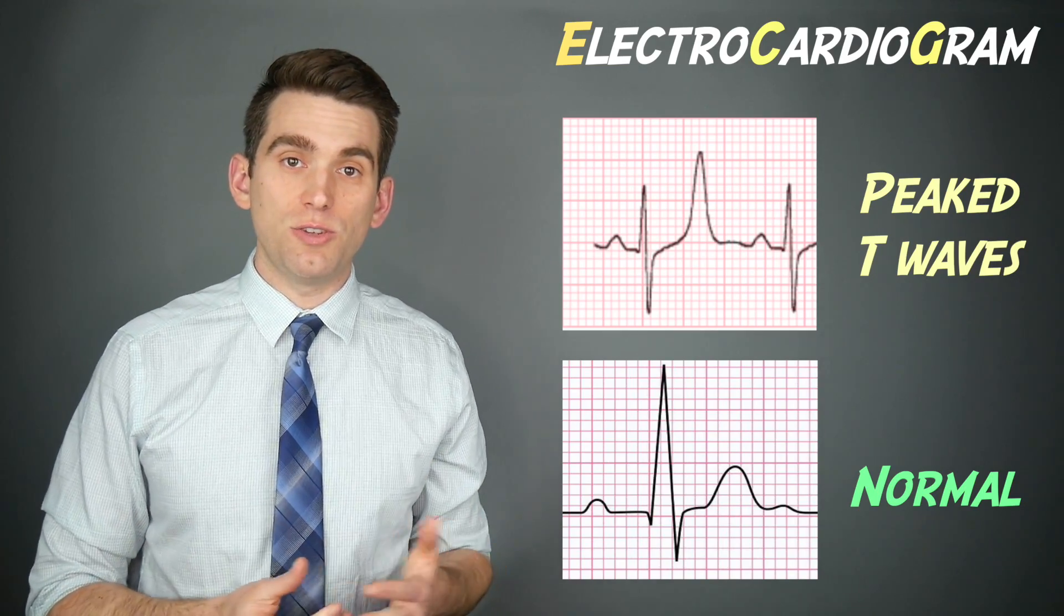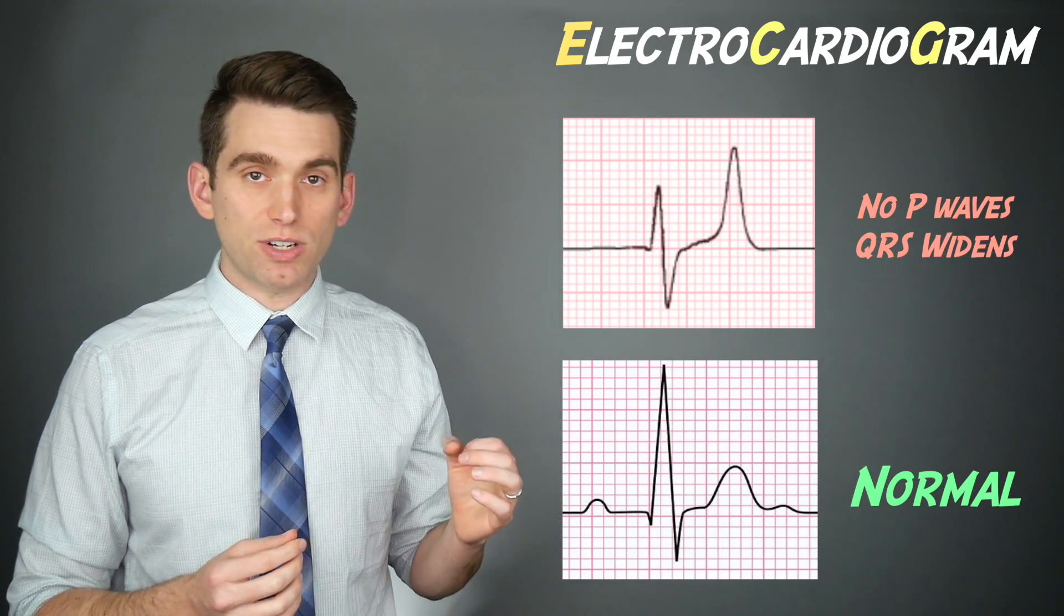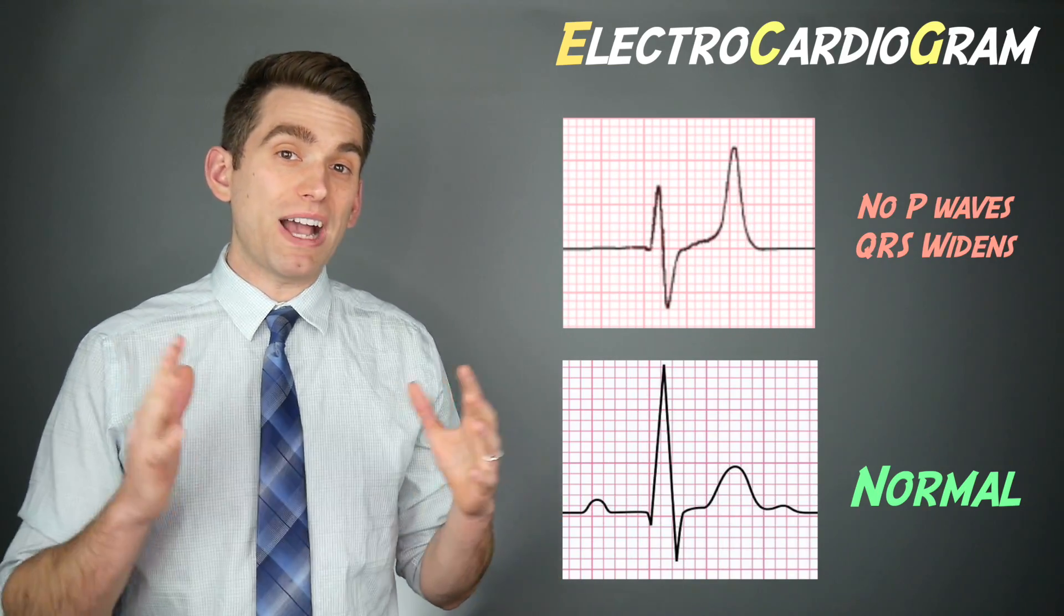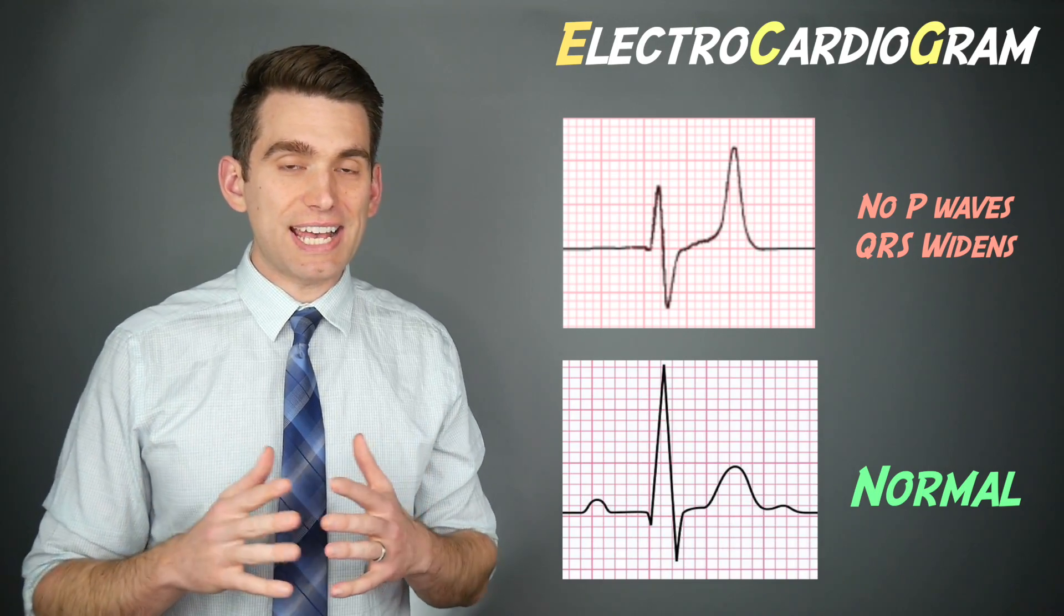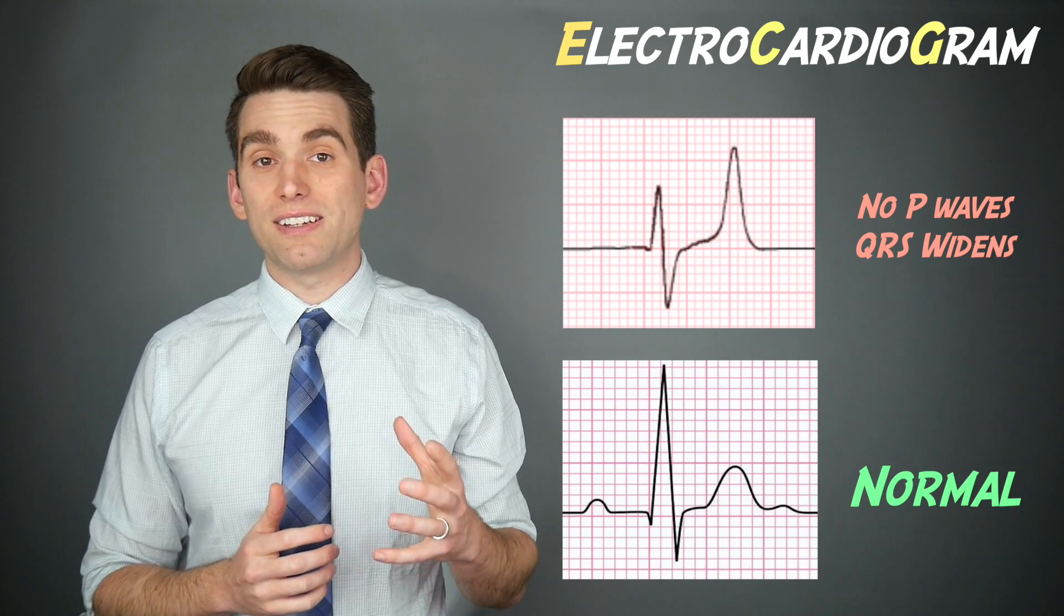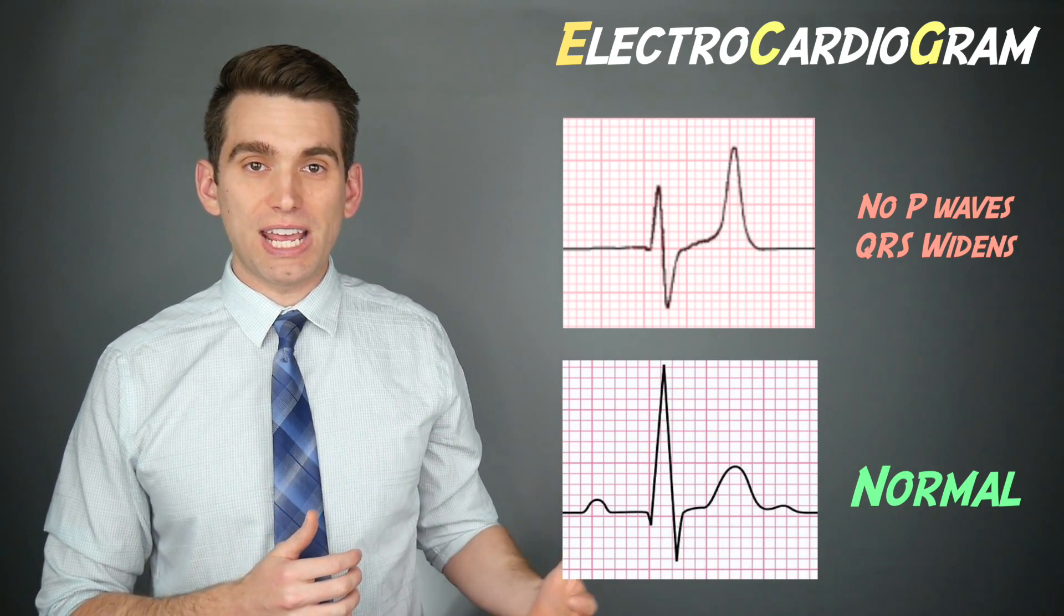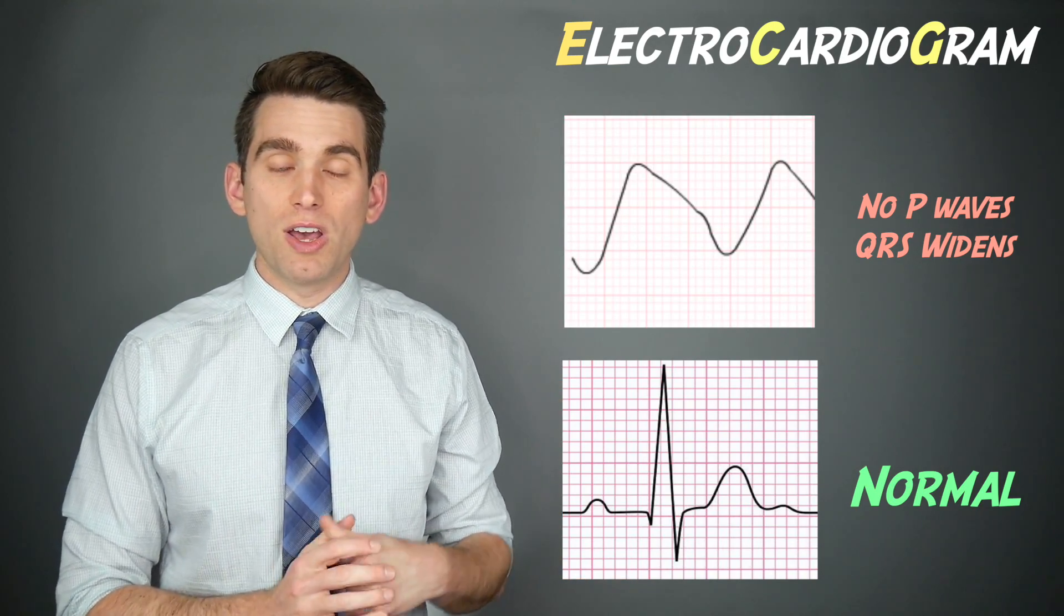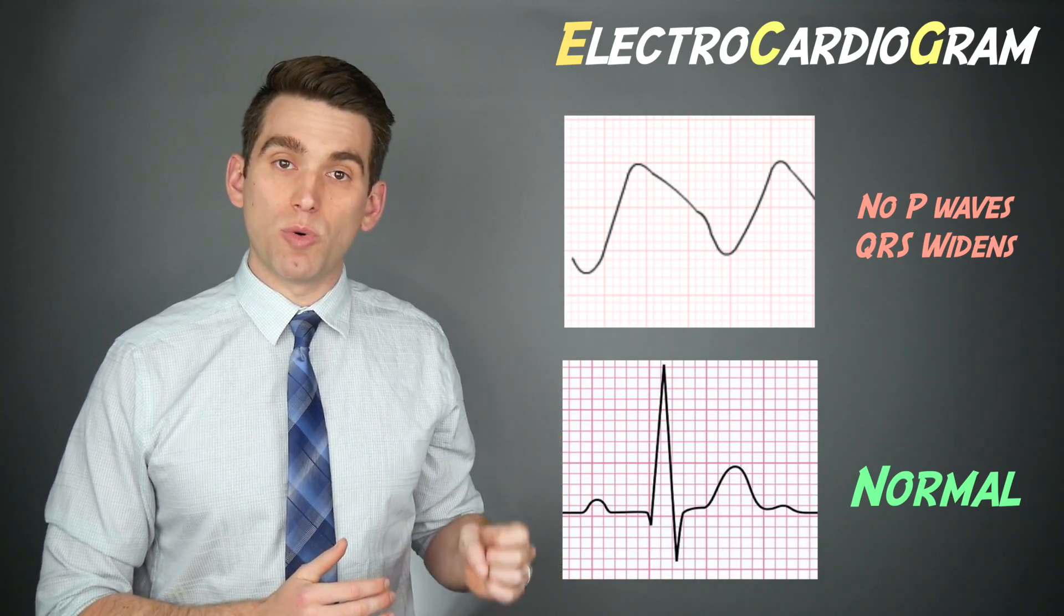As the potassium levels continue to rise, you can see the P waves start to disappear and you can see widening of that QRS complex as that action potential gets more prolonged within those heart cells. And then when we get into levels even higher above 7 or 8 is when we can start to see more dangerous arrhythmias forming, altering this heart conduction even more.